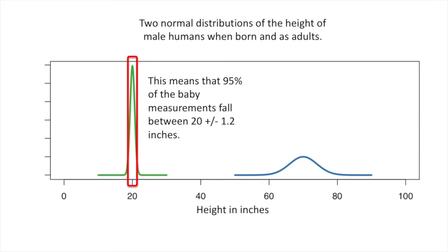This means that 95% of the baby measurements fall between 20 plus or minus 1.2 inches, and 95% of the adult measurements fall between 70 plus or minus 8 inches.